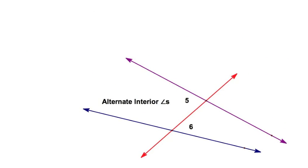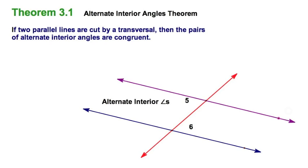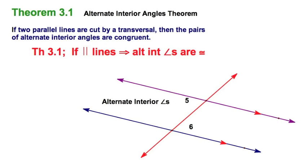Let's move on to alternate interior angles. I've got angles five and six here, with the blue and purple lines cut by the red transversal. Notice this is a theorem — it can be proved. If two parallel lines are cut by a transversal, then the two pairs of alternate interior angles are congruent. Theorem 3.1: if parallel lines, then alternate interior angles are congruent.